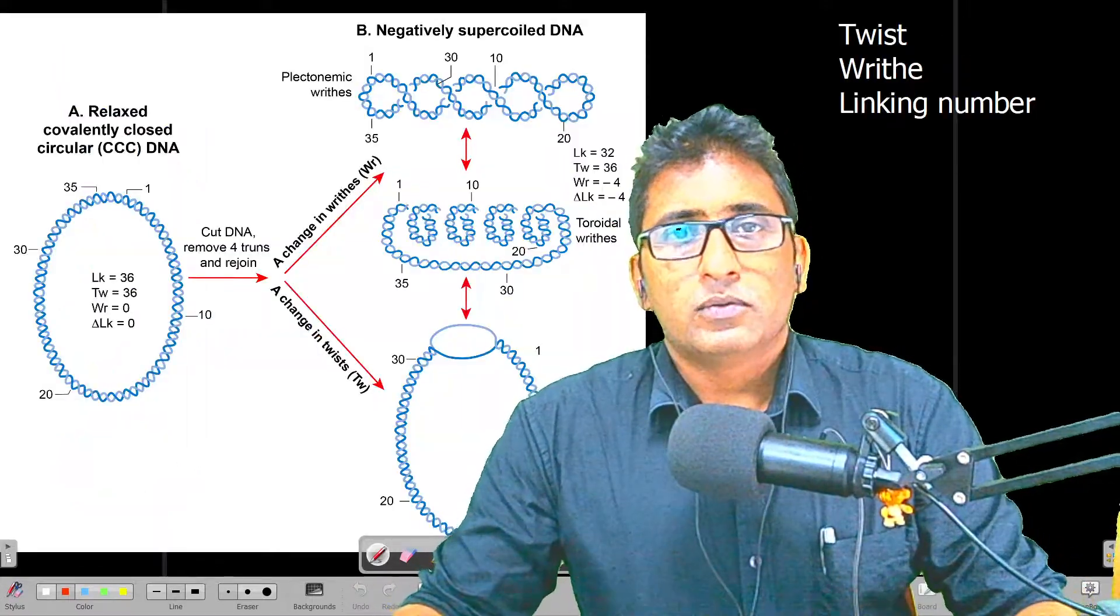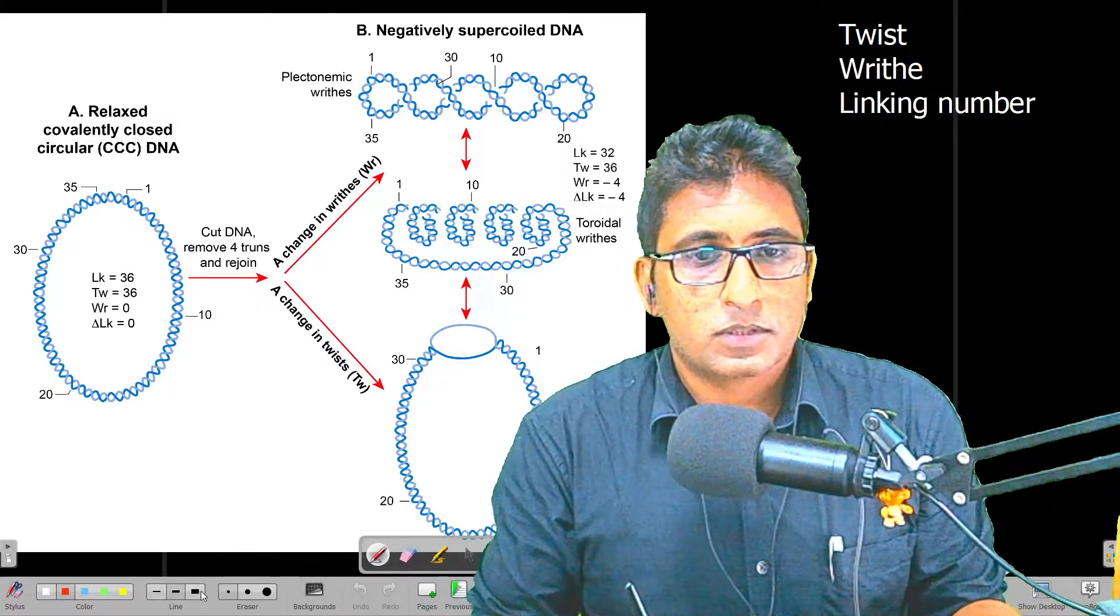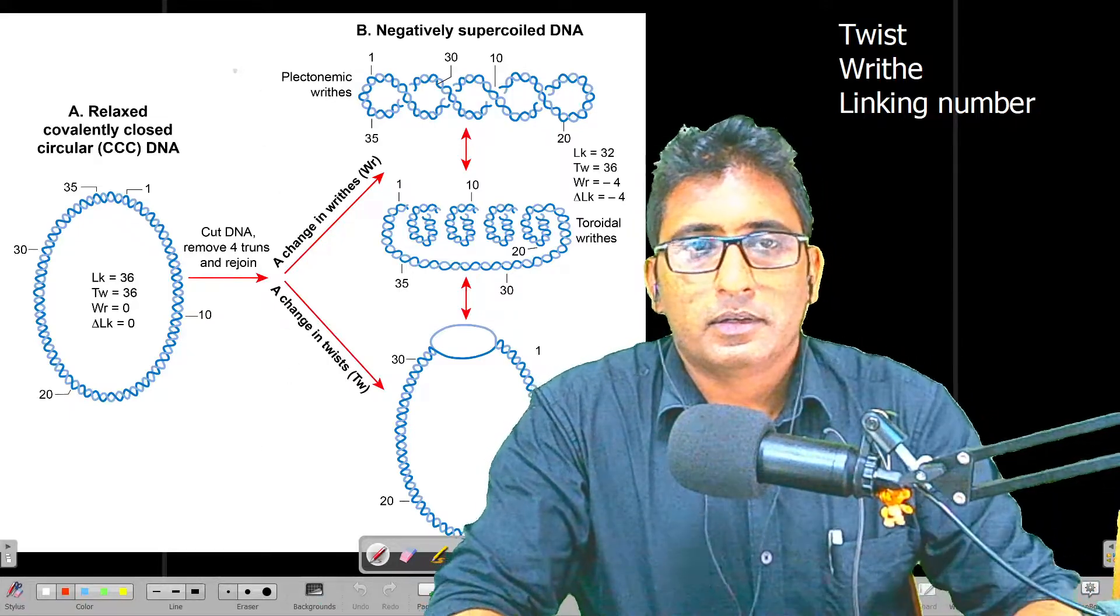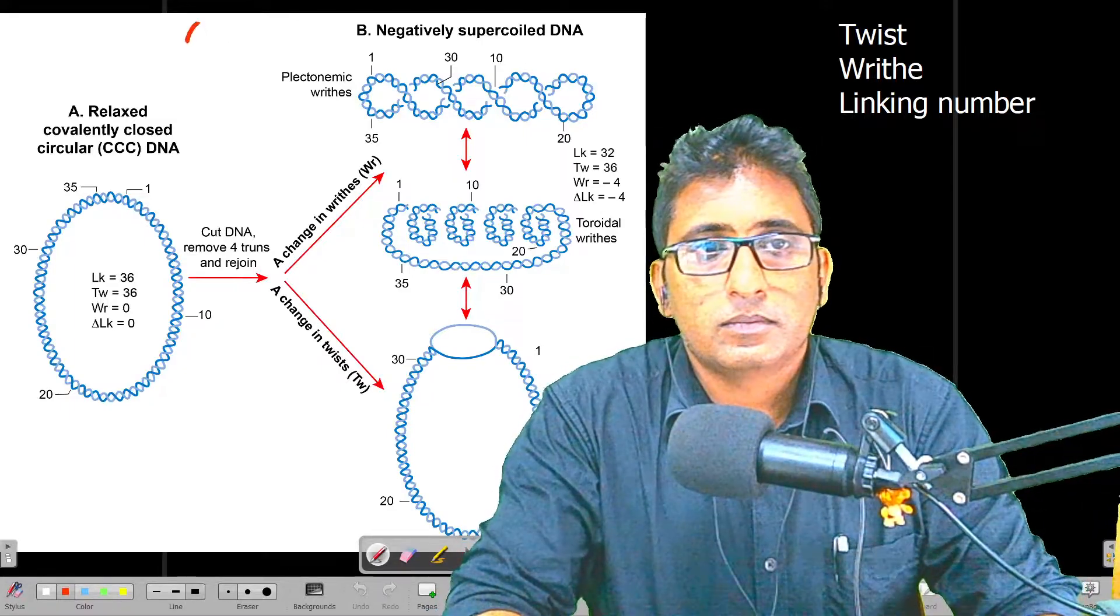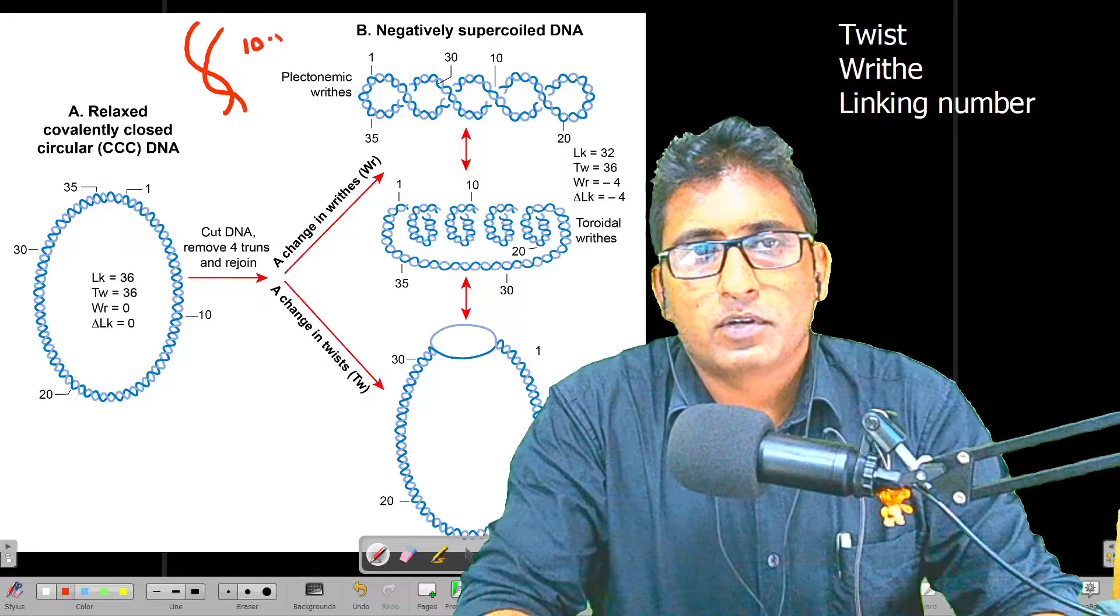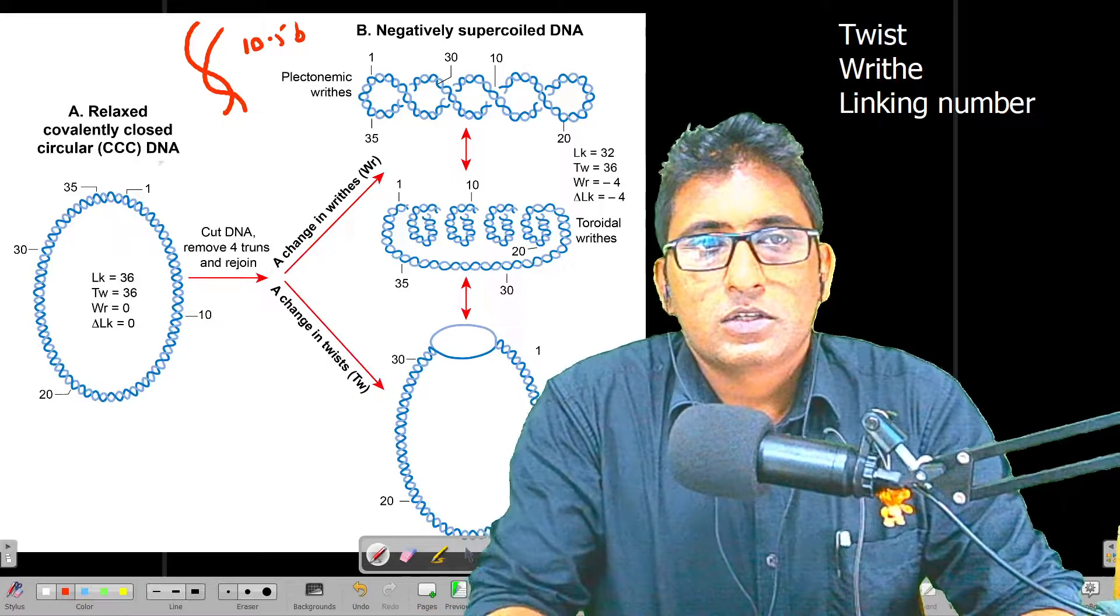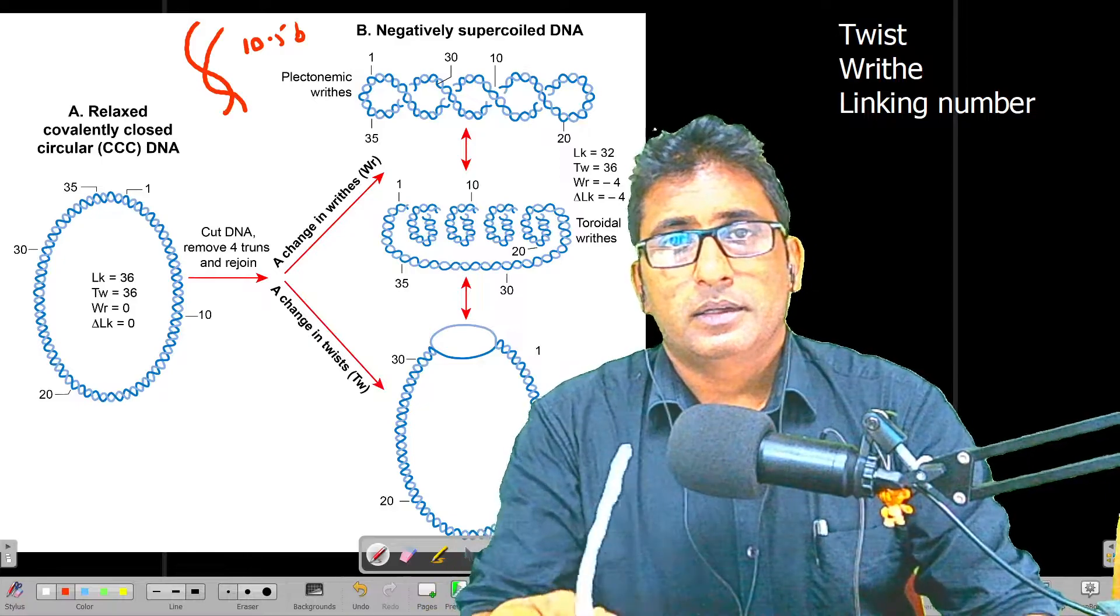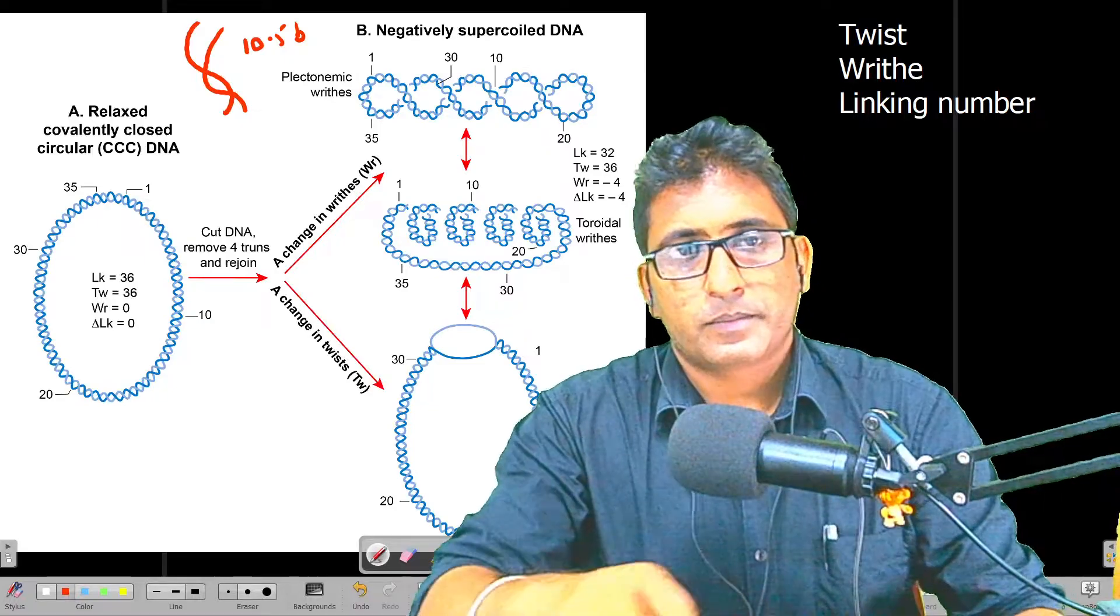We'll have to understand a few concepts in topology, and we will try to do it in most simplistic forms as usual. What we know, we can recall that when we studied about DNA structure, one coil or one turn is about 10.5 base pairs in B form.